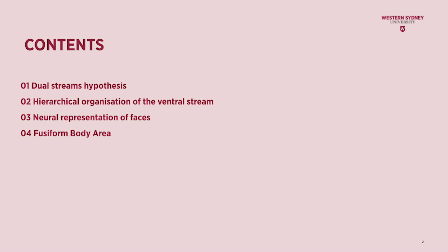In this week's lecture, we're going to continue our exploration of the visual processing hierarchy. We'll begin by looking at what is known as the dual streams hypothesis. In the second part, we'll focus on various stages of the ventral pathway, paying particular attention to the neural representation of faces. In the final section, we'll examine a brain area involved in the visual representation of human bodies.